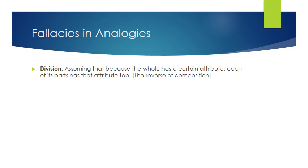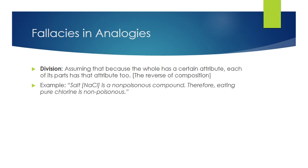The fallacy of division is basically the reverse of composition — assuming that because the whole has a certain attribute, each of its parts has that attribute too. For example: salt is a non-poisonous compound, therefore eating pure chlorine is non-poisonous. Or: if you worked for Enron, Enron may have committed crimes as a corporation, but that doesn't mean all of its employees committed crimes.